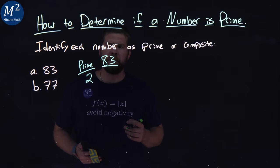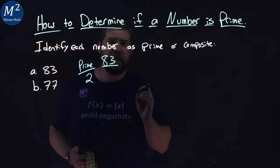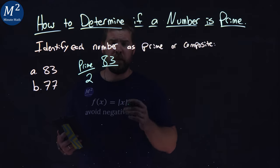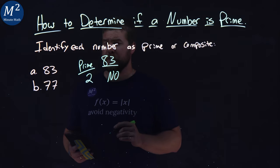Does 2 go into 83? Well, does it end in a 0, 2, 4, 6, or 8? The answer is no. So in that case, 83 is not divisible by 2.